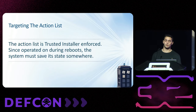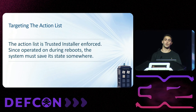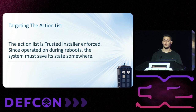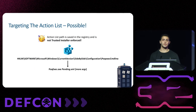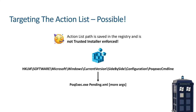At that point I decided to look at the action list. I knew it couldn't be changed directly because Trusted Installer enforces it. But since the update process runs over multiple reboots, I assumed the state of this list is saved somewhere — and if I could modify that state, I might be able to create a custom downgrading action list. I searched the action list path in the registry and found a very interesting key named POQ exec CMD line, which holds the executable that parses the list and the list path. I looked at the security attributes of this key and was extremely surprised to find it is not Trusted Installer enforced — and this allowed me to control all of the update actions.